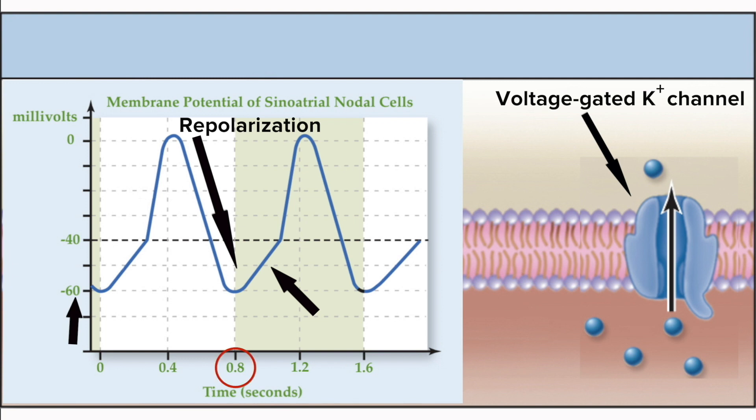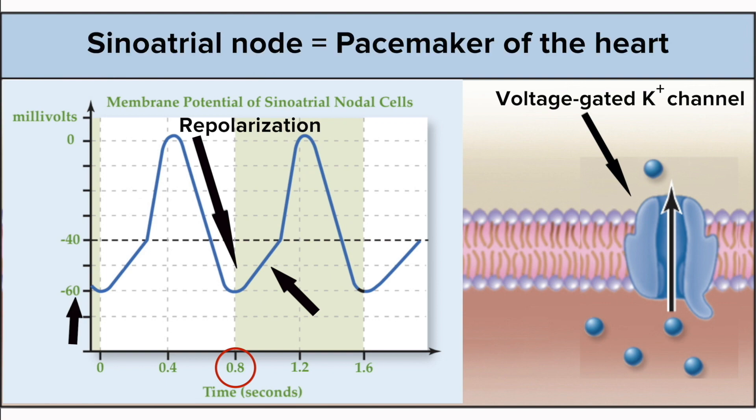This process takes about 0.8 seconds in the average adult, which results in about 75 heartbeats per minute. Since the SA node sets the pace for your heart rate, its nickname is the pacemaker of the heart.